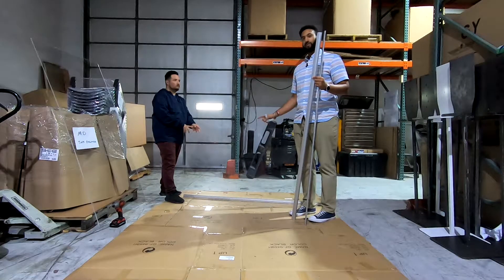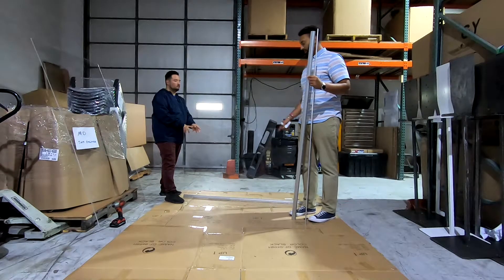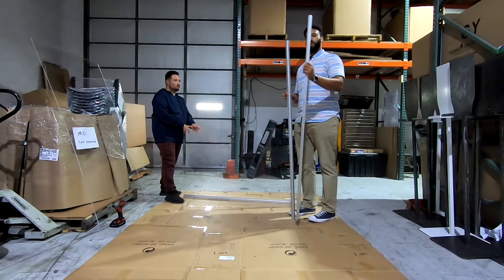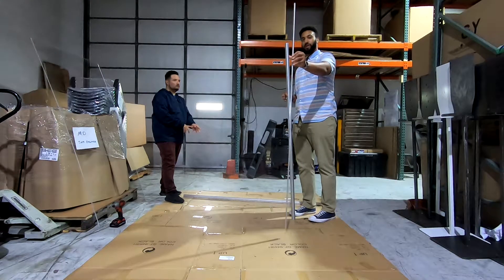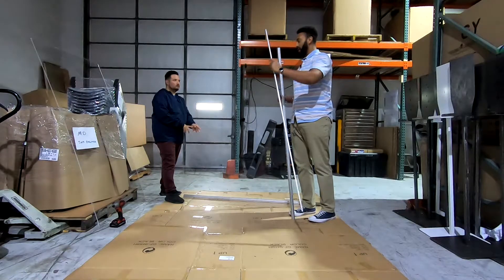After you've got your first polycarbonate sheet in place inside the frame, you will then be taking the H channel and placing it on top of the frame.